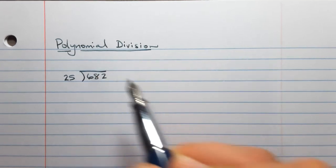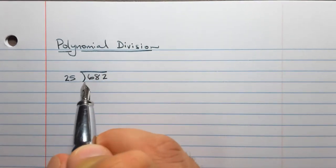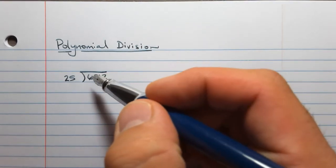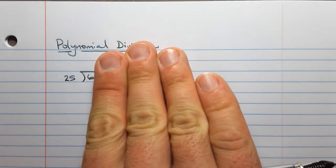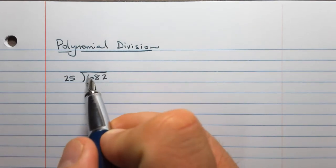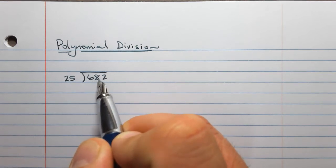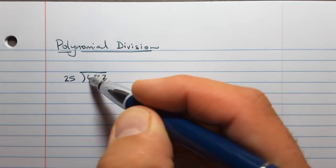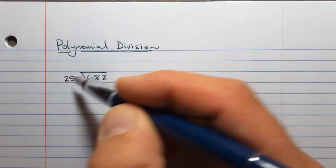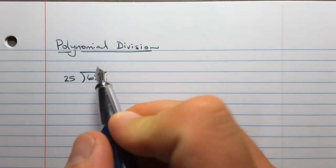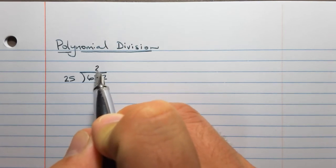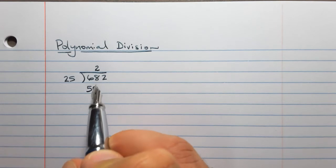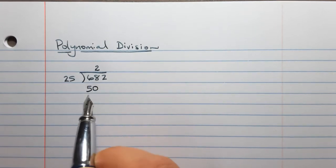We're going to start by trying to divide 682 by 25. This is how we usually write it with this long division symbol. This number underneath is called the dividend and the number at the front is called the divisor. The answer is called the quotient and it will go on top. To do this, we move from left to right through the dividend and try to divide evenly by this number.